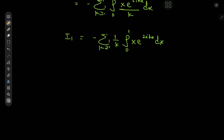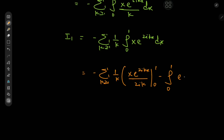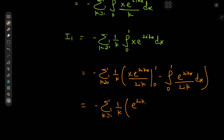Applying integration by parts — differentiating x and integrating the exponential — gives −∑_k (1/k) · [x·e^(2ikx)/(2ik)]₀¹ − ∫₀¹ e^(2ikx)/(2ik) dx. The lower limit at x=0 vanishes. At x=1 we get e^(2ik)/(2ik). Integrating the remaining term gives e^(2ikx)/(2ik) again, evaluated from 0 to 1.